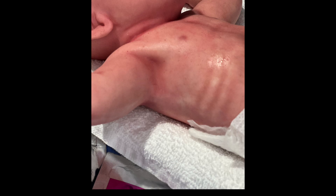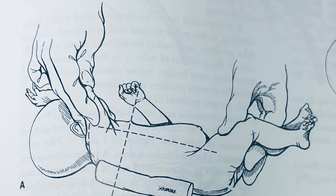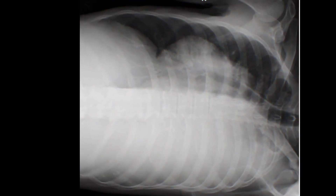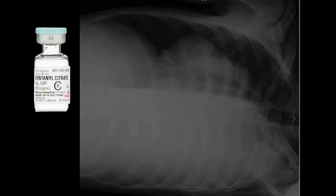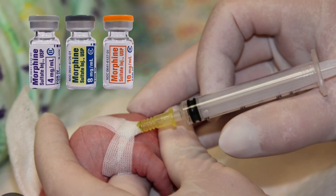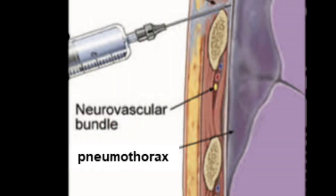Next, you'll place your patient affected side up and choose your landmarks, typically the 4th intercostal space, mid-axillary line. Placing your patient affected side up cannot be overemphasized, as it helps the air to rise, as seen in this lateral decubitus. If non-emergent and time permits, be sure to premedicate prior to placing your chest tube. As you prepare mentally to place the chest tube, remember you will be sliding over the top of the rib, not underneath, in order to avoid the neurovascular bundle.